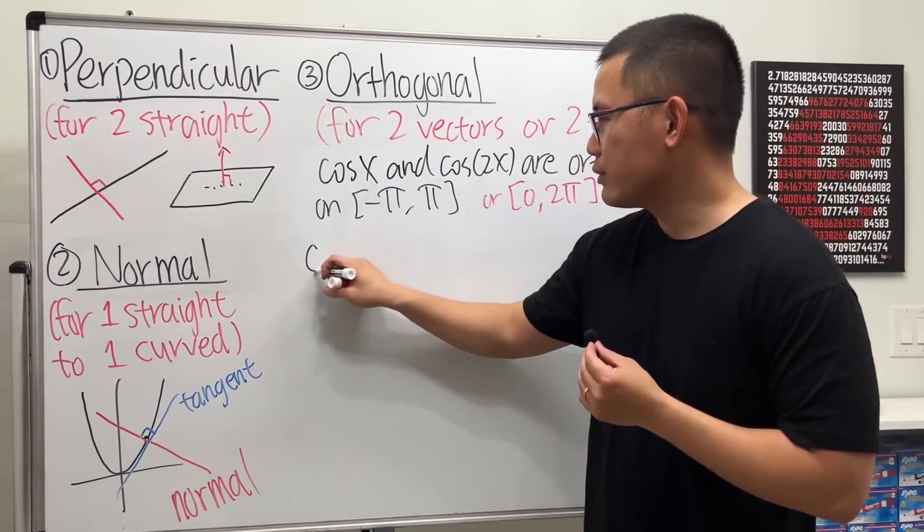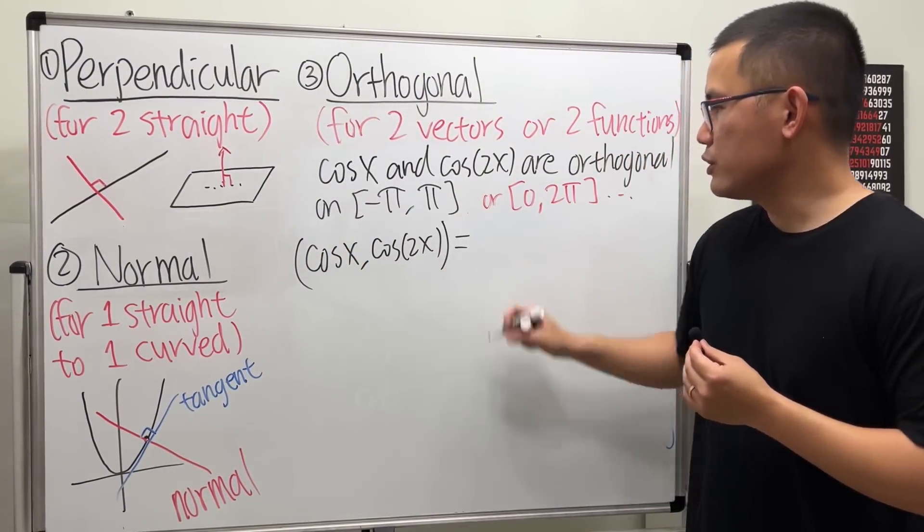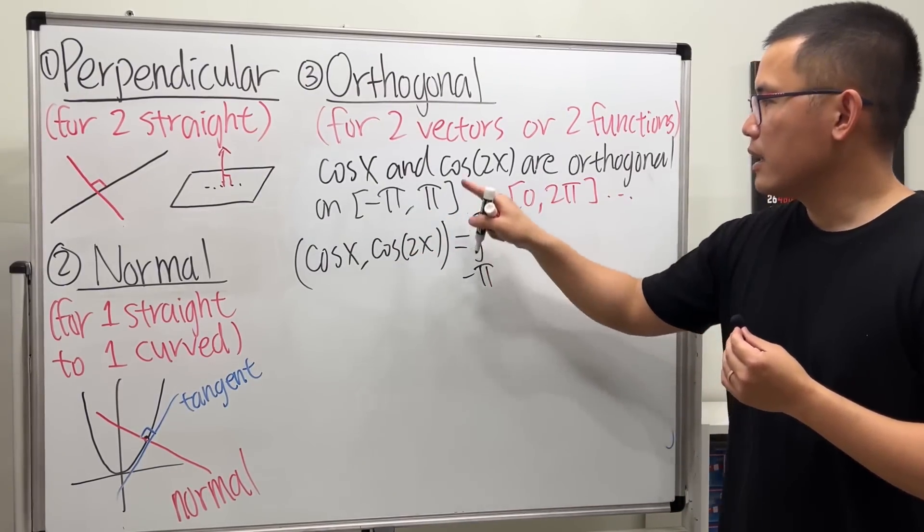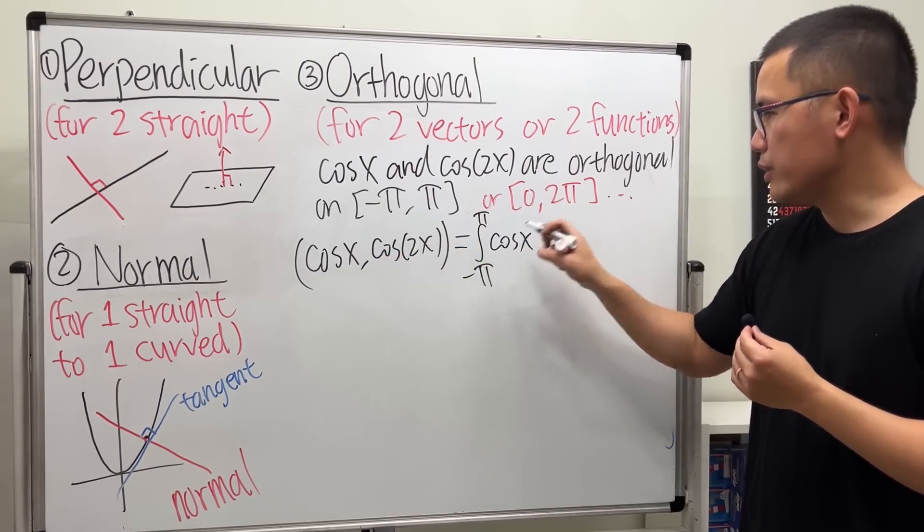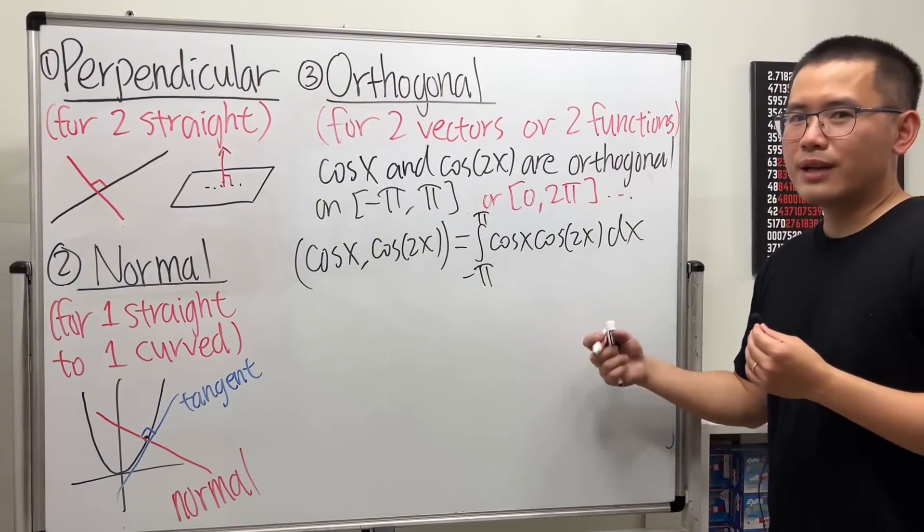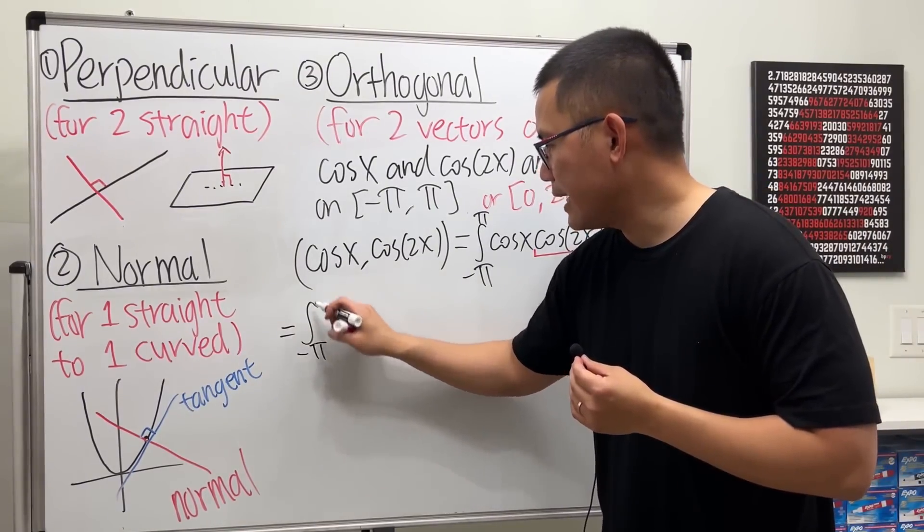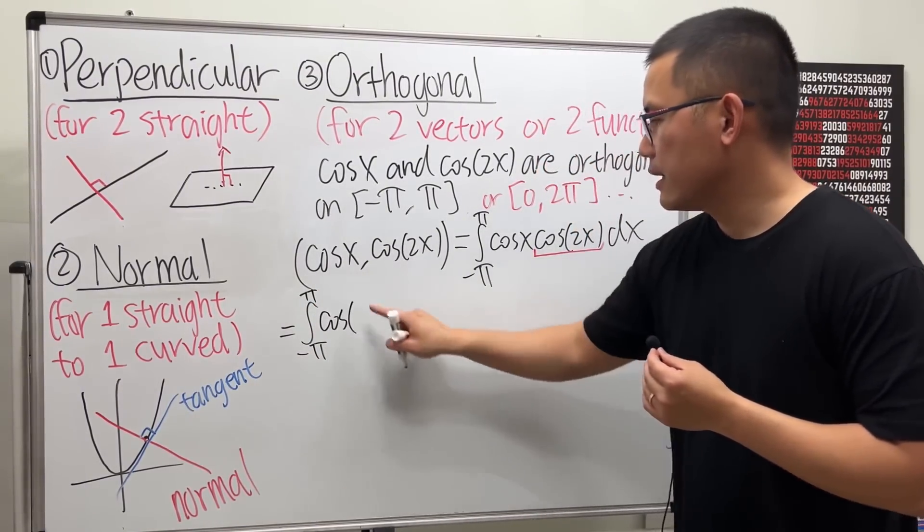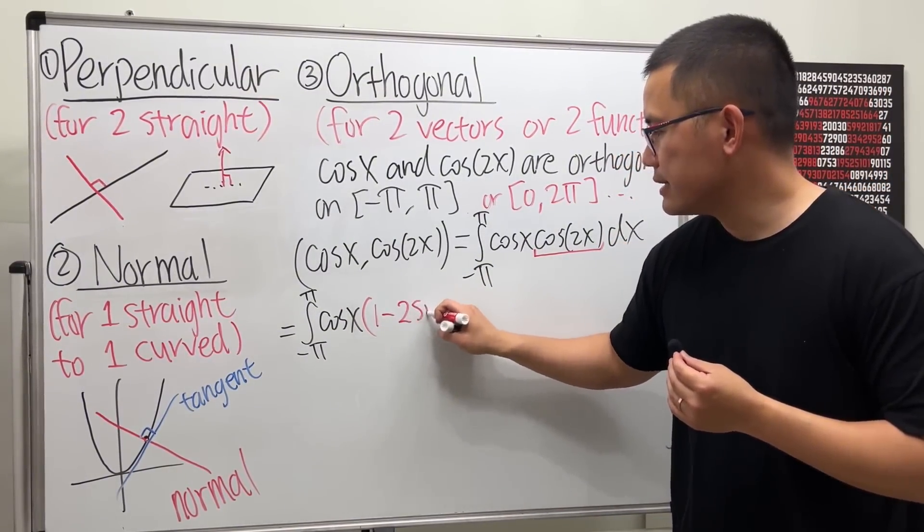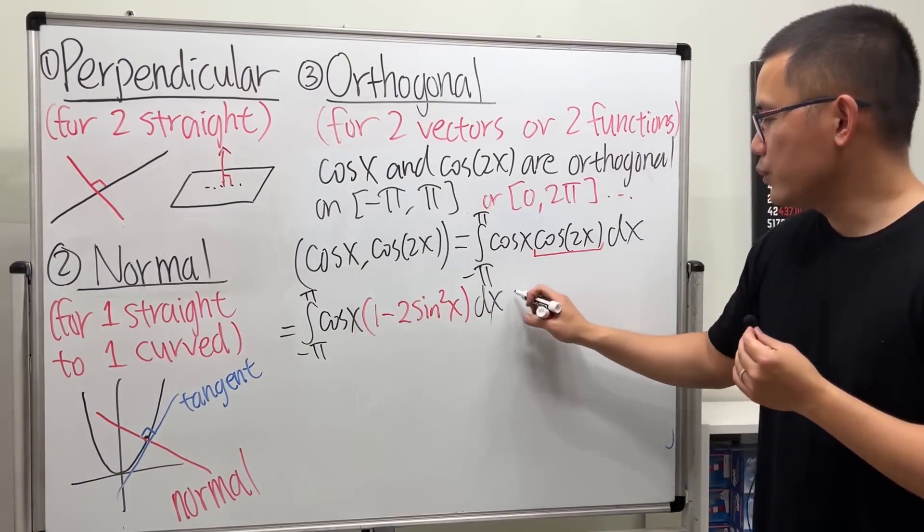So to check it, we will just have to compute the inner product of cos(x) and cos(2x). So by the definition that we saw earlier, this is the integral going from -π to π. The first function is cos(x), and we just do a regular multiplication here with the second function like this. And to compute this integral, we can just use an identity for that, and this will give us -π to π, cos(x), and then for this, I will use 1 - 2sin²(x) identity.